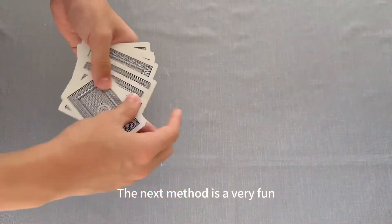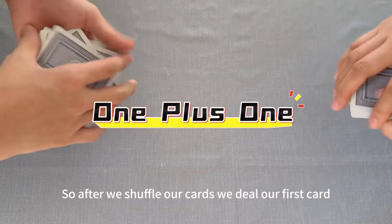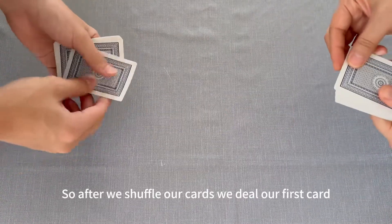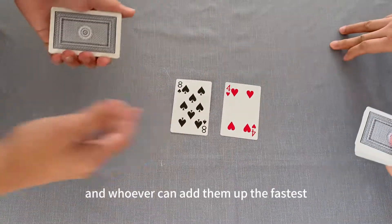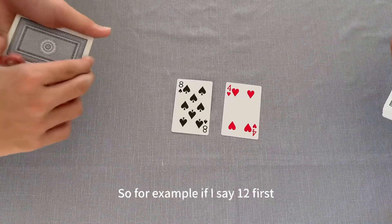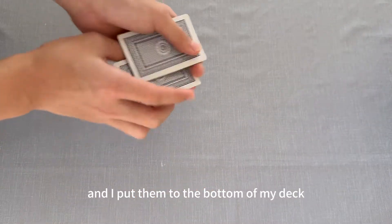The next method is a very fun multiplayer game called the 1 plus 1. So, after we shuffle our cards, we deal our first card, and whoever can add them up the fastest gets both of the cards. So, for example, if I say 12 first, I get both of these cards and I put them to the bottom of my deck.